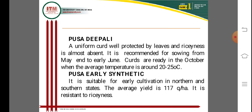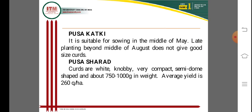Pusa Dipali has uniform curds well protected by leaves, with raciness almost absent. It is recommended for sowing in May to early June, and curds are ready in October. Average temperature requirement is around 20 to 25 degrees centigrade. Pusa Early Synthetics is suitable for early cultivation in northern and southern states, with an average yield of 117 quintals per hectare and resistance to resinous conditions.